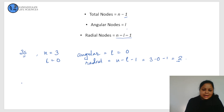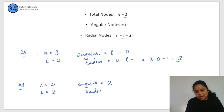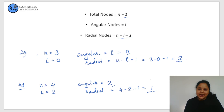Let's take another example. For the 4d orbital, n equals 4 and l equals 2. The number of angular nodes will be 2, and the number of radial nodes will be 4 minus 2 minus 1, which equals 1. The total number of nodes is just the sum of these two.